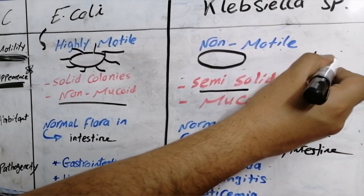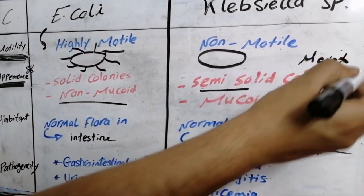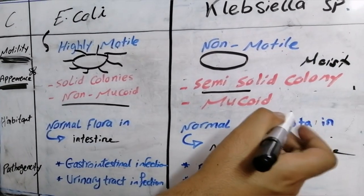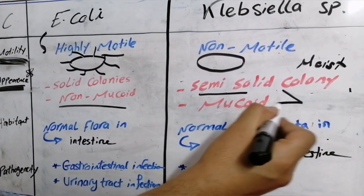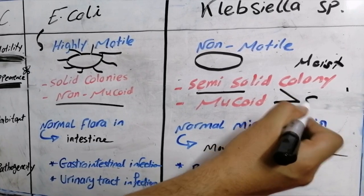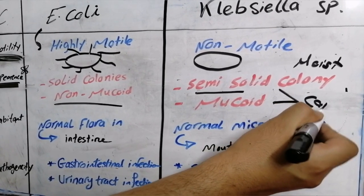Unlike Klebsiella, which shows semi-solid, sticky, moist colonies and is mucoid due to the formation of a capsule.